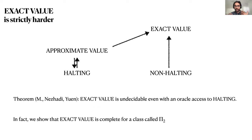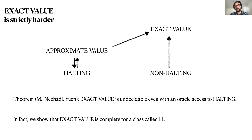In our paper we showed that something stronger is true. Imagine a parallel universe in which we could solve the halting problem, the approximate value problem, and the non-halting problem. In this imaginary world you could solve all three problems. We showed that even in this parallel universe, there is no algorithm for the exact value problem. This tells you how much more difficult the exact value problem is compared to the approximate value problem.